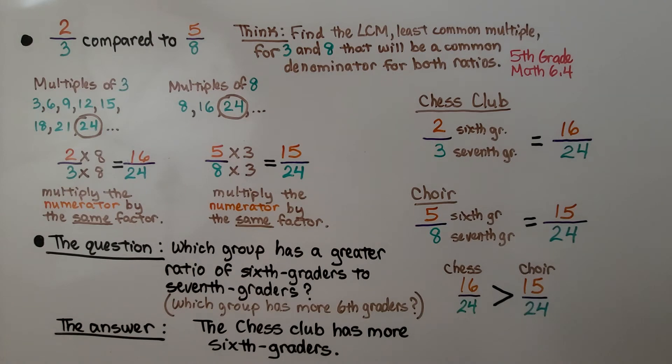We multiply the numerator by the same factor that we multiplied the denominator. Our question was which group has a greater ratio of 6th graders to 7th graders. That means which group has more 6th graders. And we can see chess has 16 and choir has 15, so the chess club has more 6th graders. It's got a greater ratio of 6th graders to 7th graders.